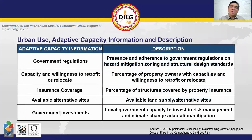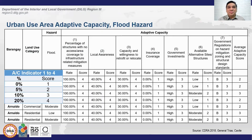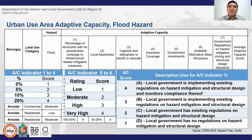Adaptive capacity of urban uses is determined by the following indicators: government regulations, capacity and willingness to retrofit or relocate, insurance coverage, available alternative sites, and government investments. The adaptive capacity scores for the first four indicators can be rated using this guide. Indicators five and six can be rated as low, moderate, high, and very high, while indicator seven may use A, B, C, or D as scores according to the given parameters.